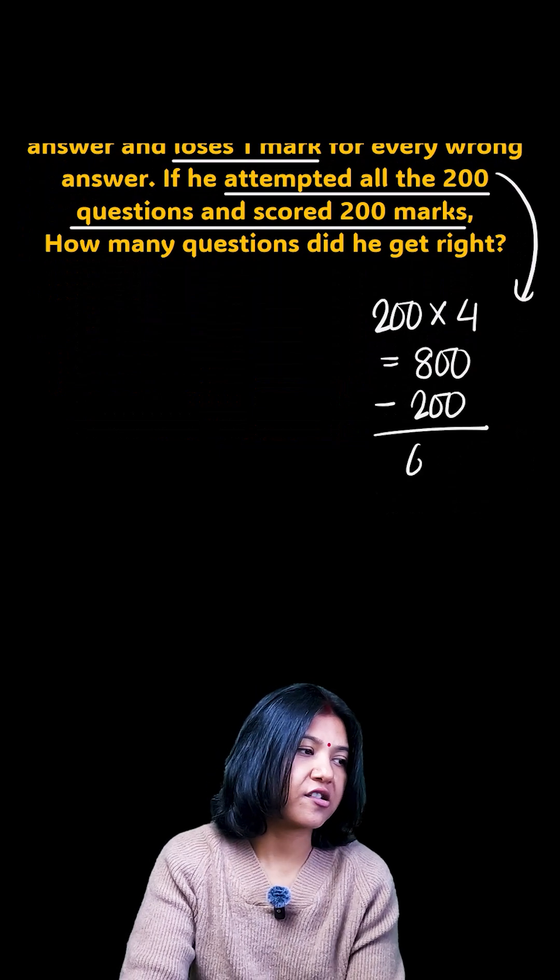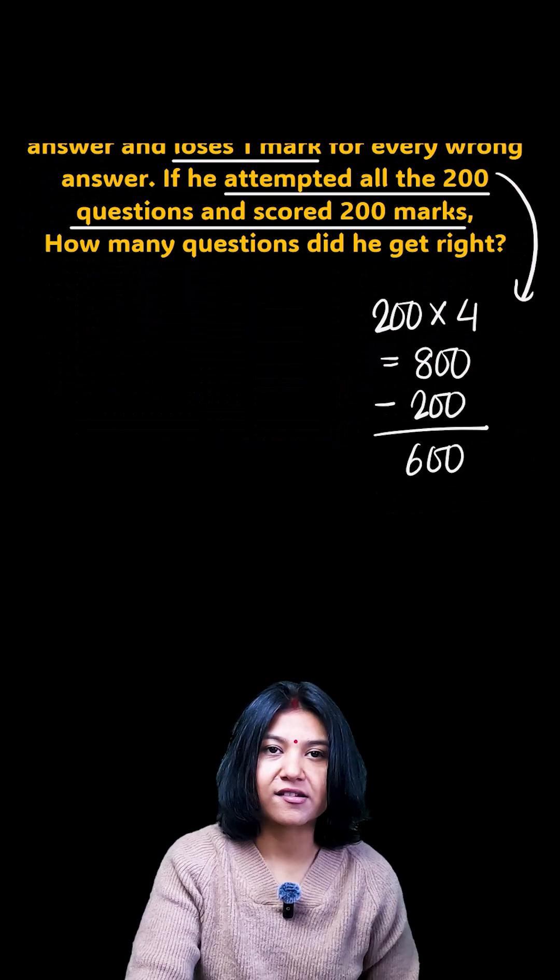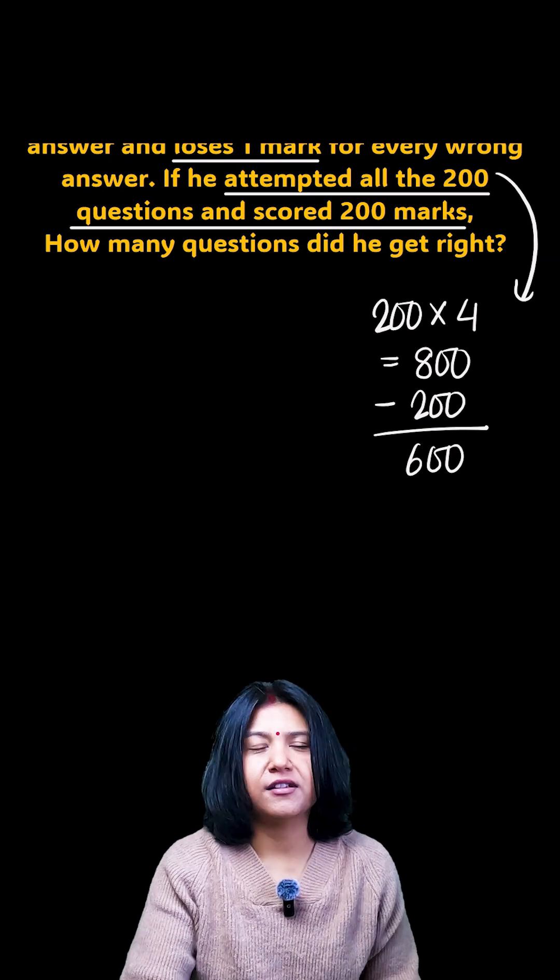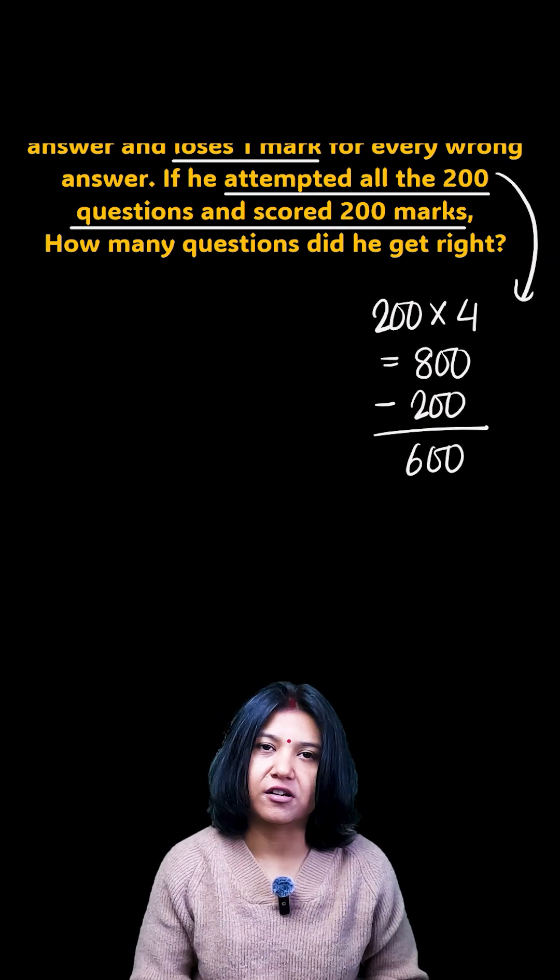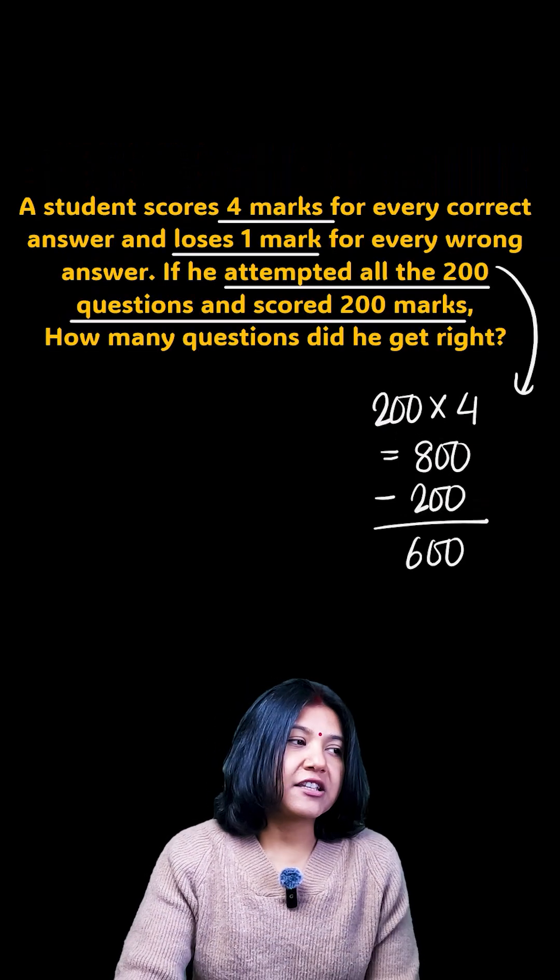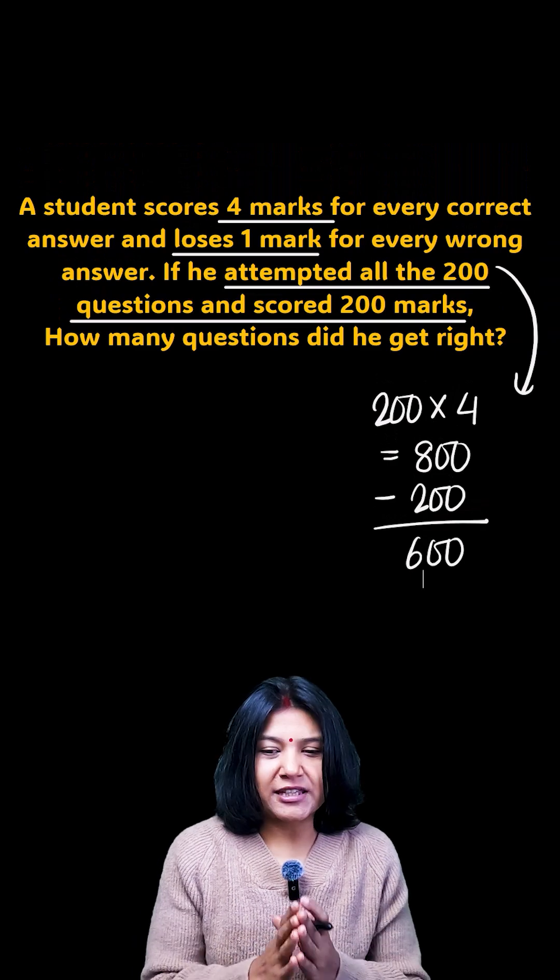Yeah, now this 600 marks lost represents that you have gone wrong in certain questions. So how many? Now the best part is you are making one question wrong then you are not just losing the four marks of that question, you are also losing one mark of something correct you have done.